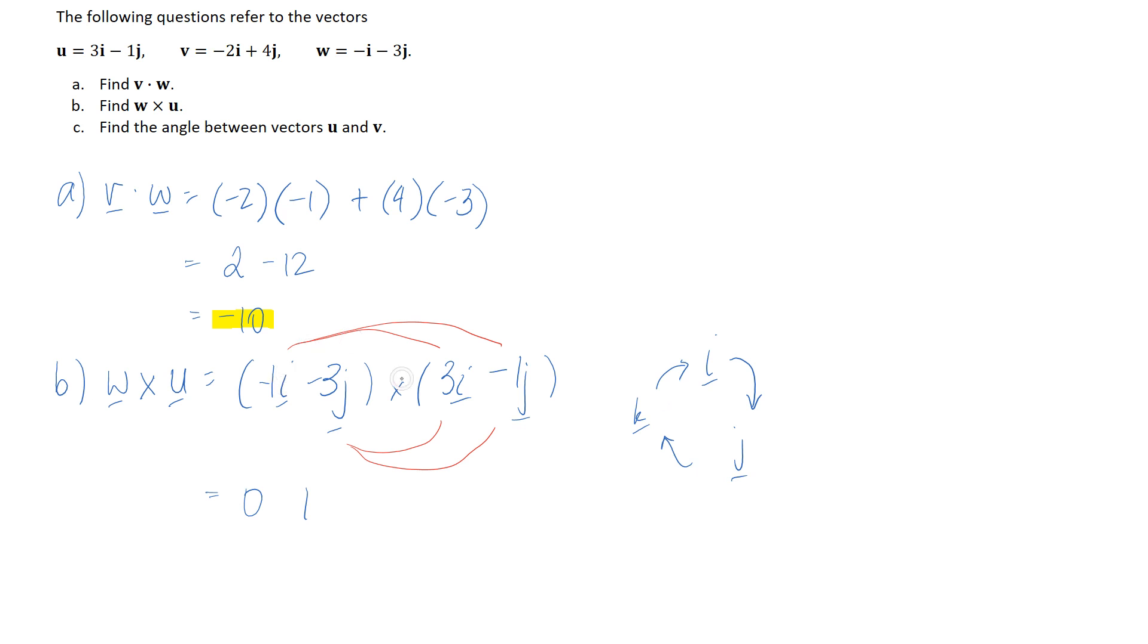So here we have i cross j. If we look at our diagram i cross j that's going in the direction of the arrow so that means it's going to be a positive and we always get the other one falling out so i cross j is positive k. So this needs to be multiplied by positive k.